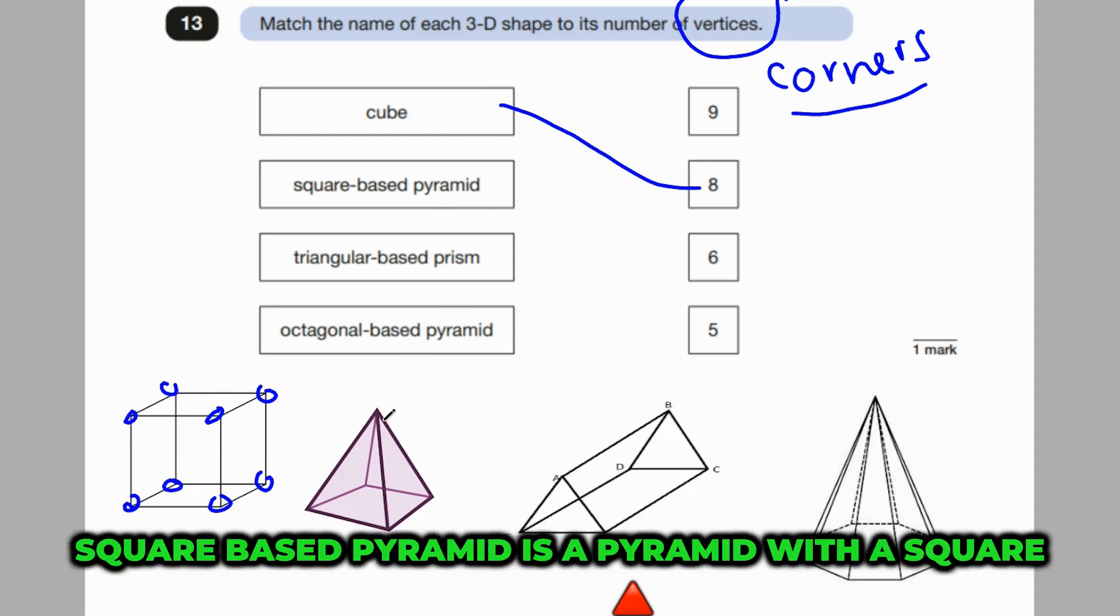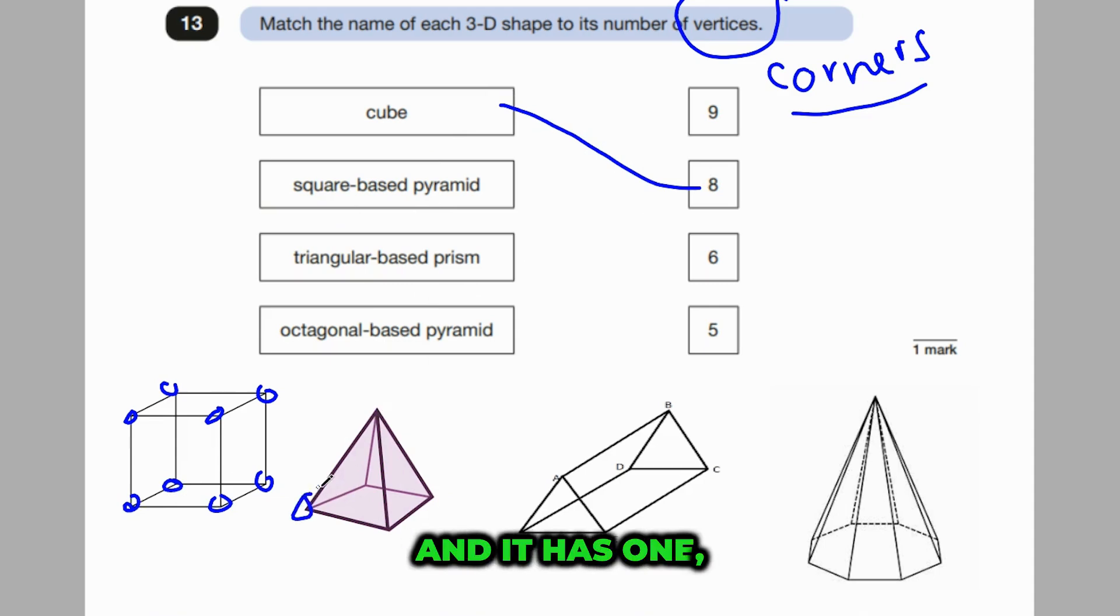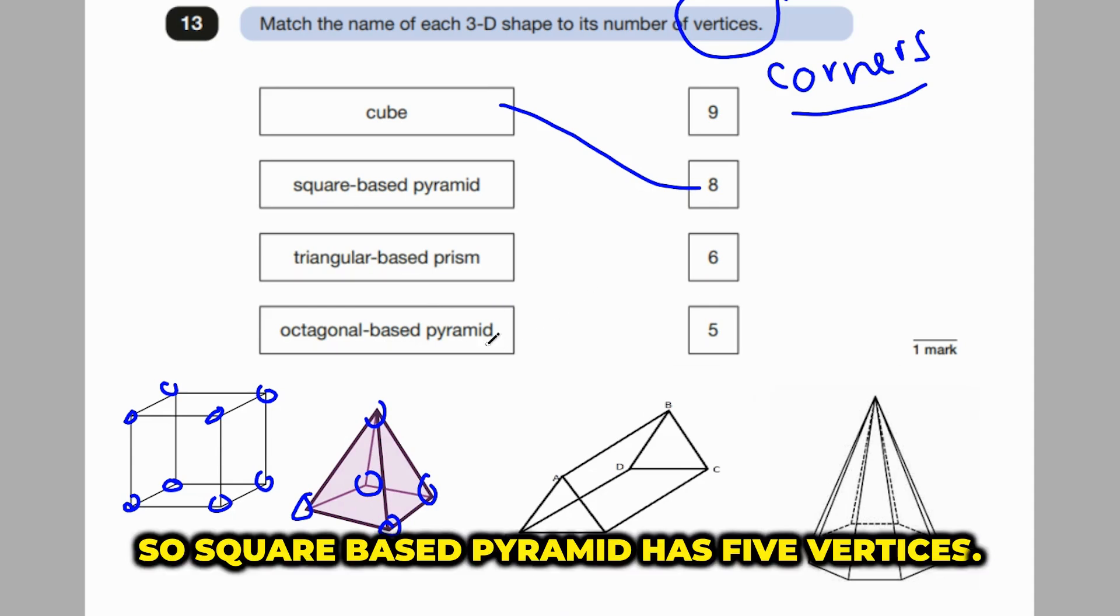Square-based pyramid is a pyramid with a square base. That's this one. And it has 1, 2, 3, 4, 5. So square-based pyramid has 5 vertices.